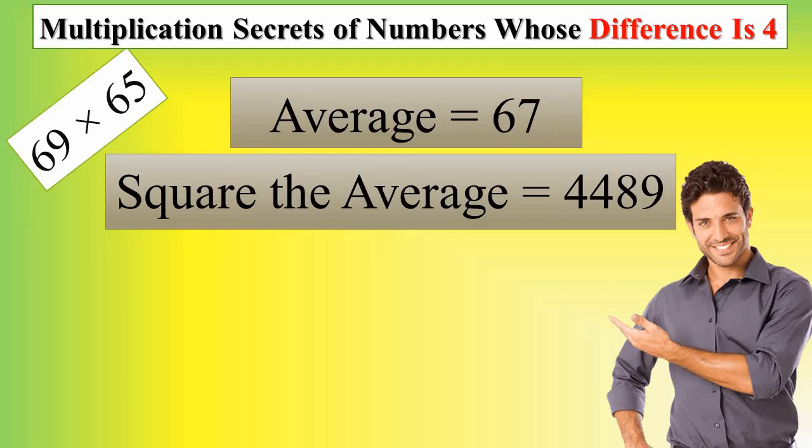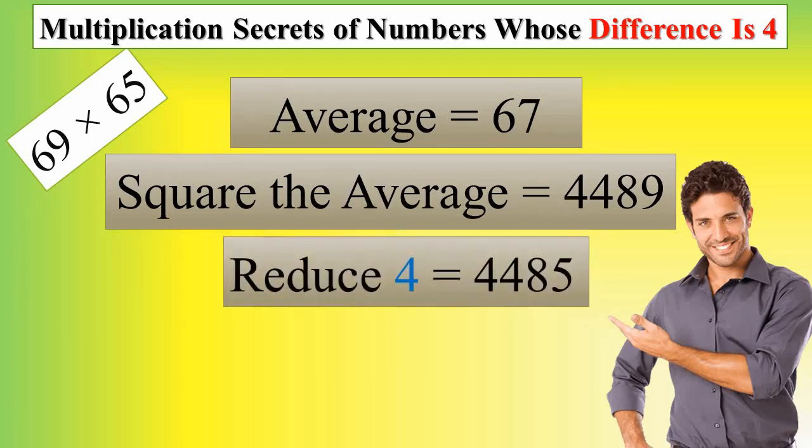In the last step, we will reduce the number obtained from 4. We will reduce 4 from 4,489 equals 4,485. This is the answer. Easy.